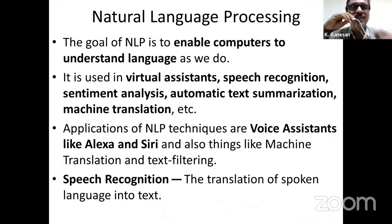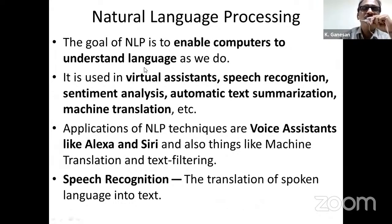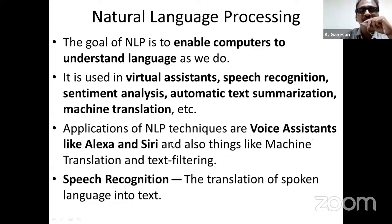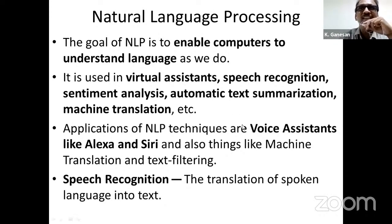For doing this, we use something called natural language processing. The goal of NLP is to enable the computer to understand language as we do — just like a human being understands English, Tamil, or Hindi, we want a computer to understand a given language. It is used in many virtual assistants, speech recognition systems, sentiment analysis, automatic text summarization, machine translation, and so on. In the last 20 years, huge amounts of research have gone into NLP and many applications have come out — voice assistants like Alexa and Siri, machine translation, and text filtering.